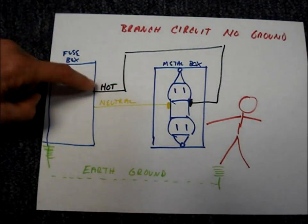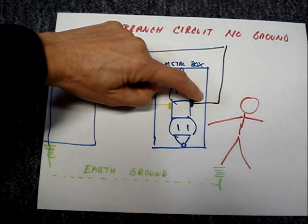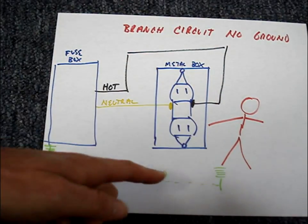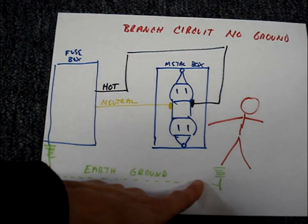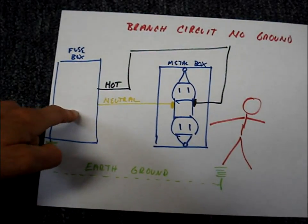The circuit would work this way: The current would flow through the hot onto the metal box, through the person, and then through the earth, which is now the big ground wire, and back up to the source.